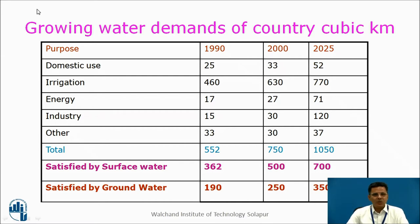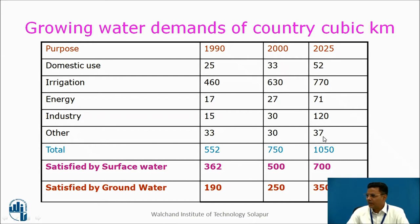Just see the growing water demands over a period of time. For domestic use: 25, 33, 52 km³. For irrigation: 460 in 1990, 630 in 2000, and 770 in 2025 is expected. Total demands are growing from 552 in 1990 to about 1050 in 2025. Out of this, we are trying to use both surface water and ground water. By 2000, we satisfied the total demand of 750 using 500 km³ of surface water and 250 km³ of ground water, and by 2025 these are the expected figures.